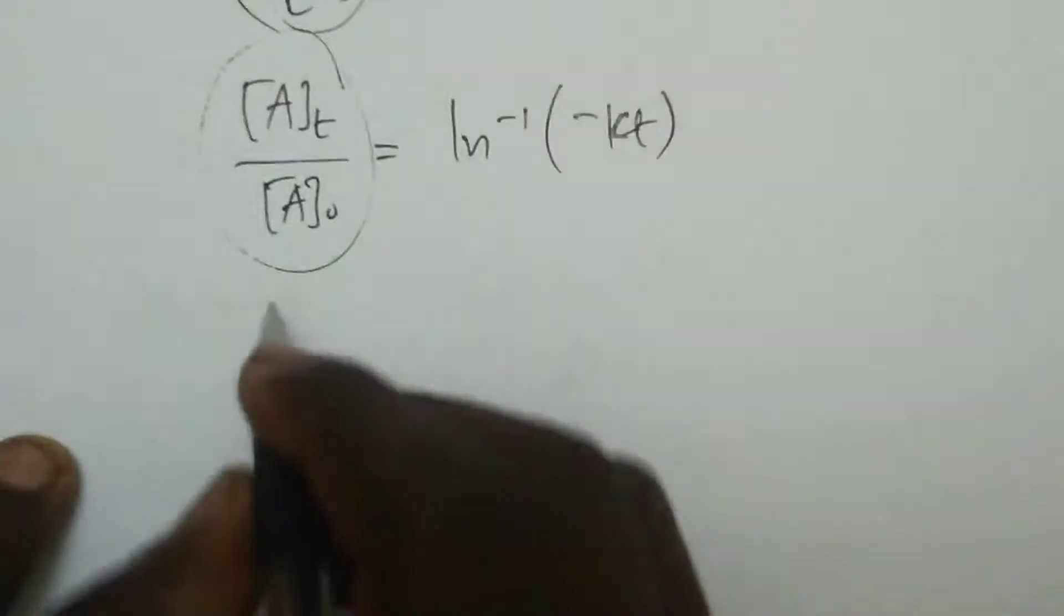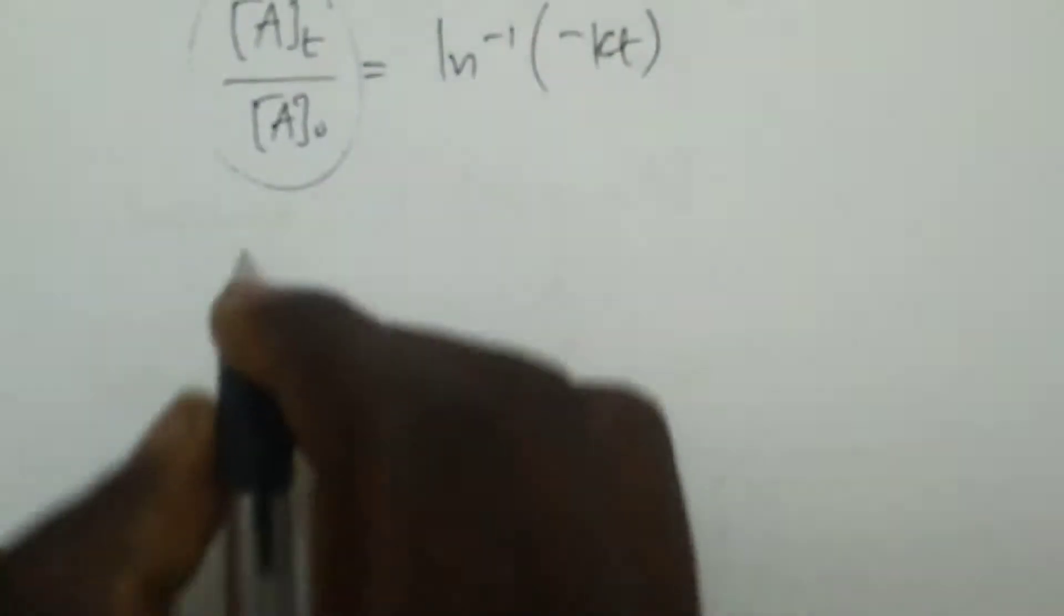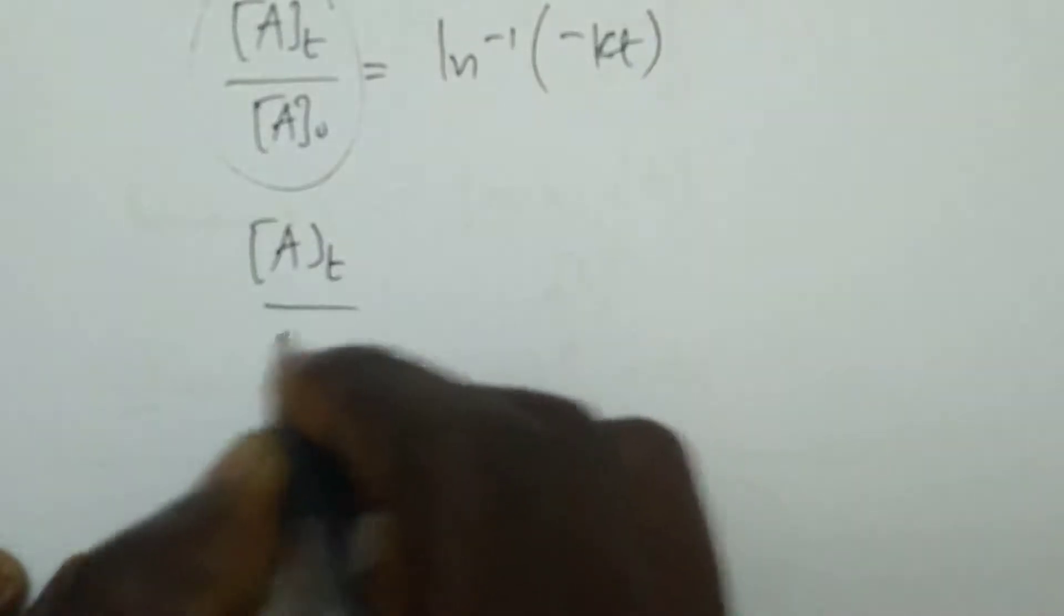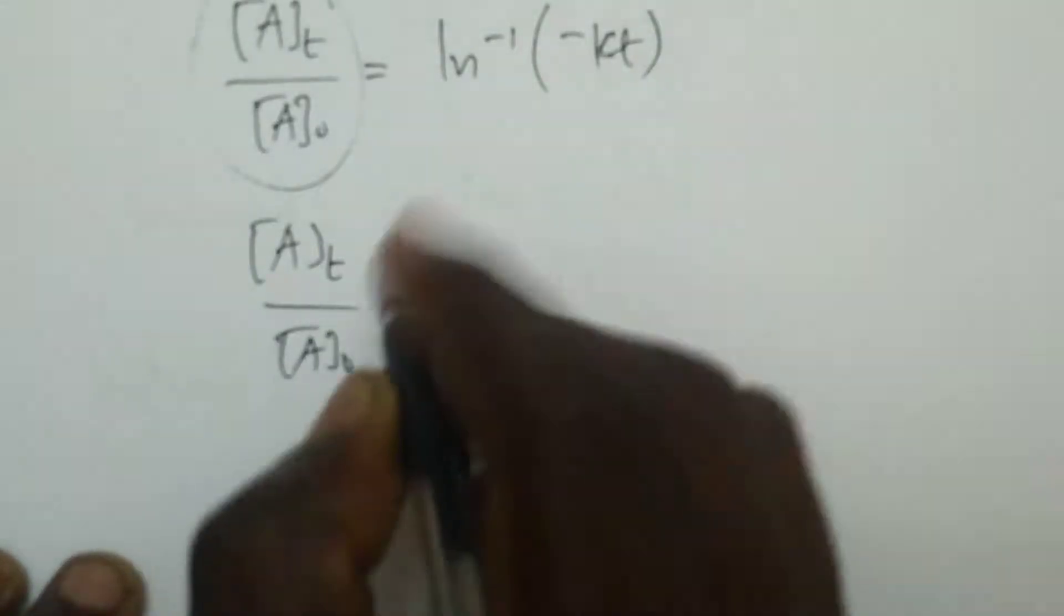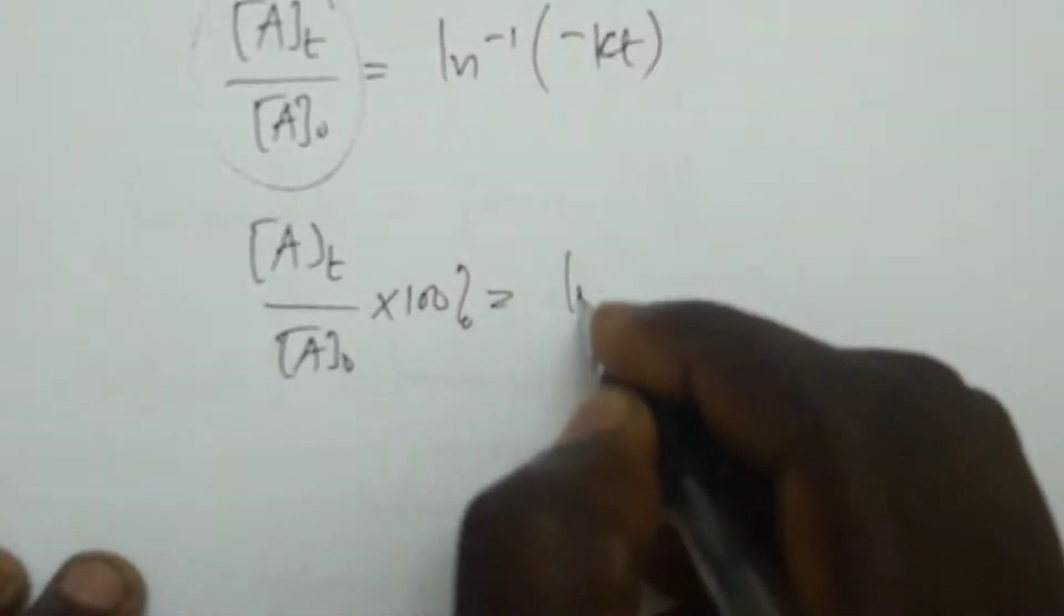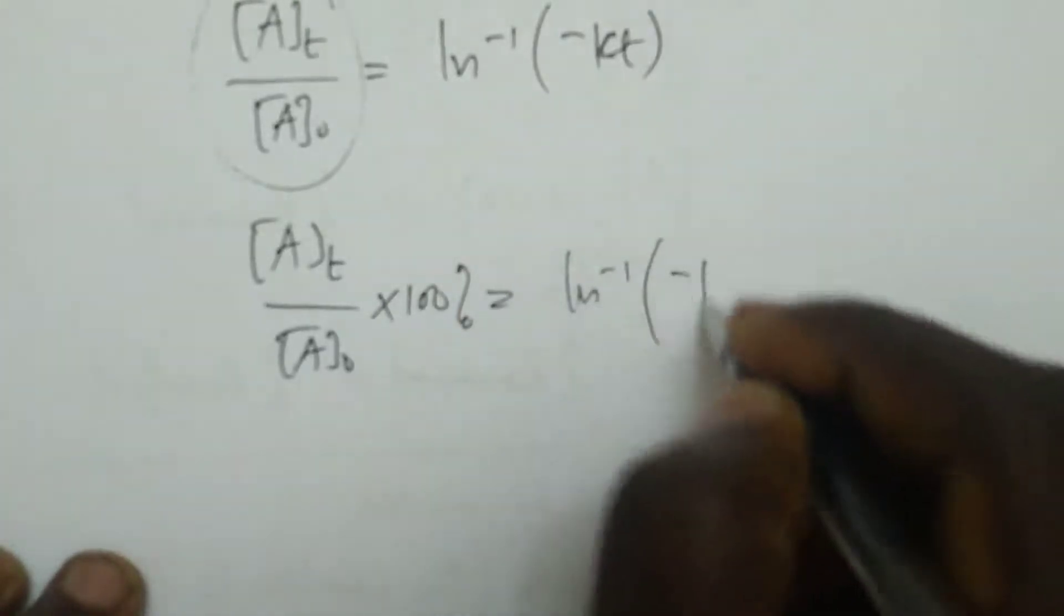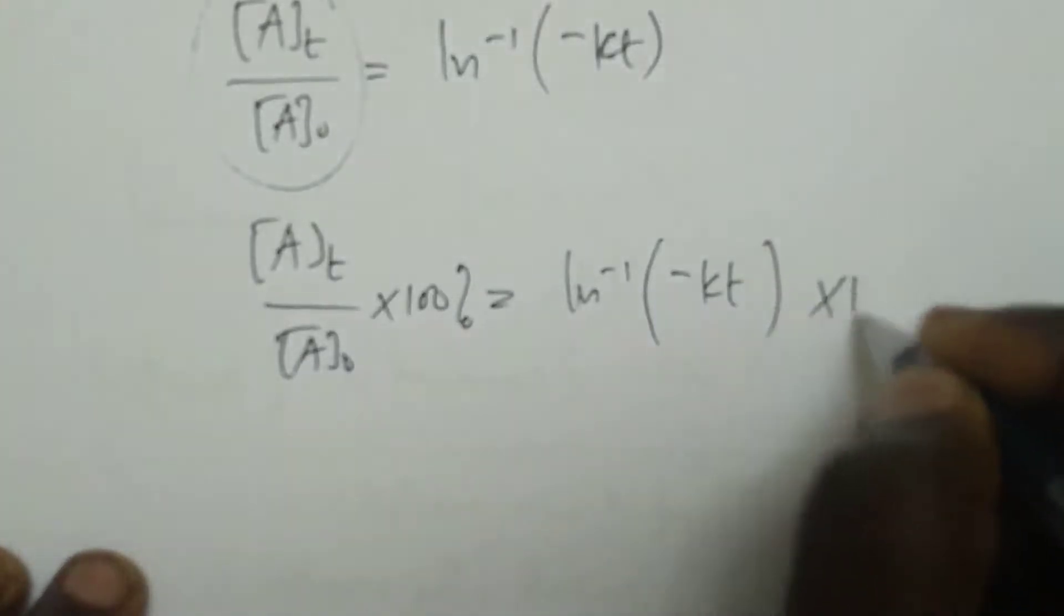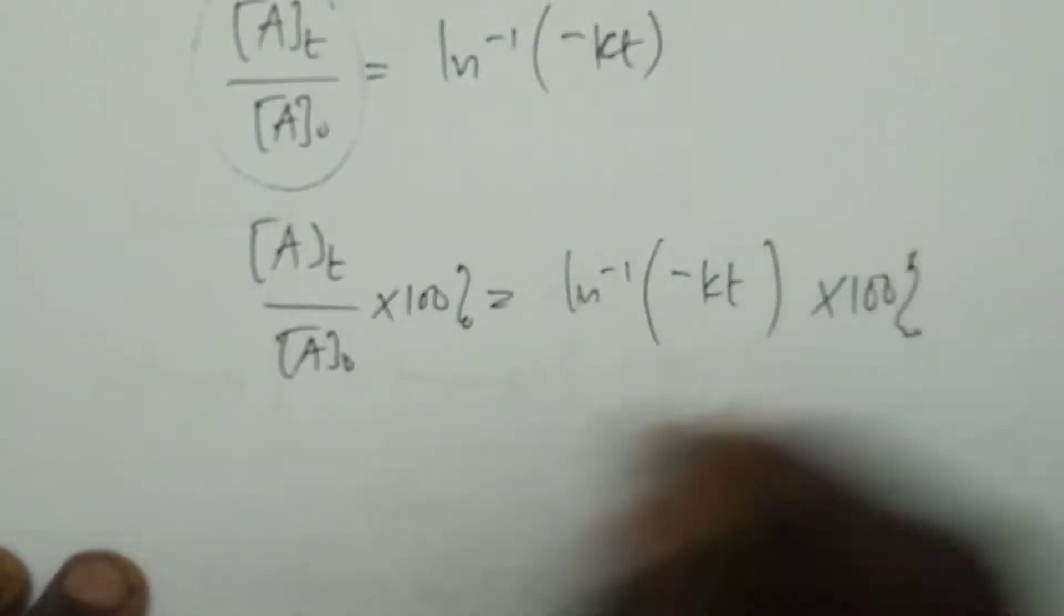So, we'll get the percentage there, which means we will take a concentration Aₜ divided by concentration A₀ then times 100 percent, which equals ln inverse of negative Kt then times 100 percent. That's the way we get percentage remained.